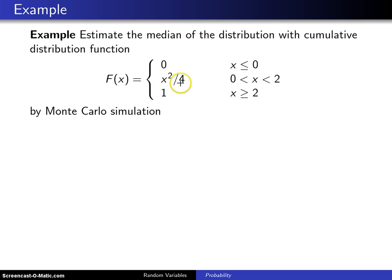x squared over 4 on the support values x between 0 and 2, and 1 for x greater than or equal to 2, and we're going to estimate that population median by Monte Carlo simulation.